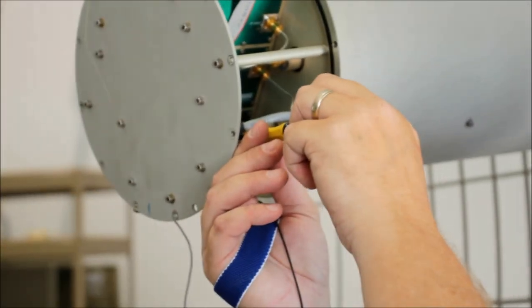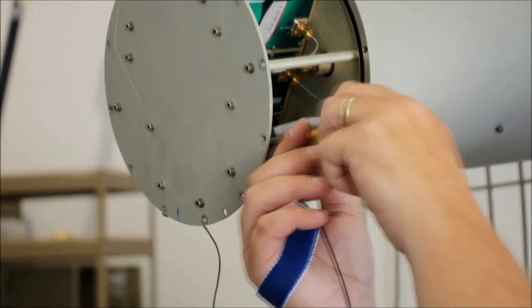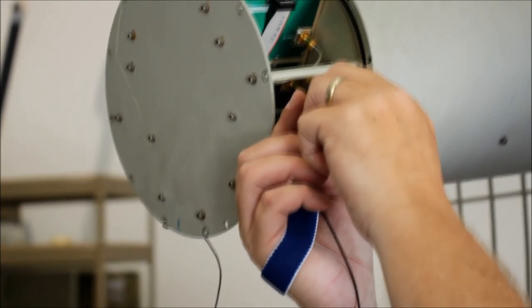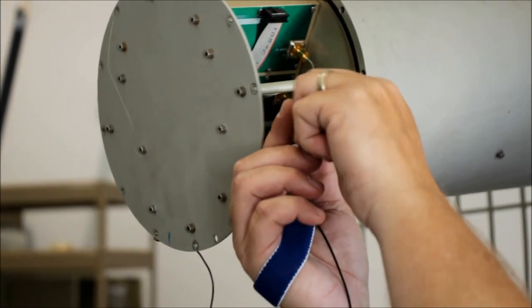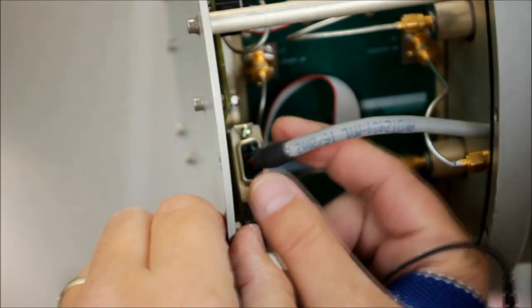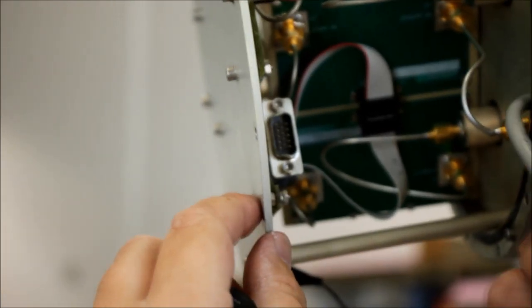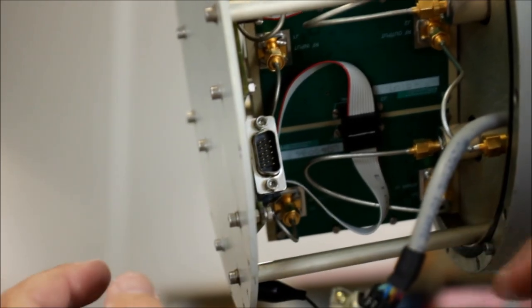To remove that DB9 connector you just need the flat screwdriver. And that's why we want to use our ESD protection just in case our fingers slip and we're going to pull that connector off. That's actually a DB15.